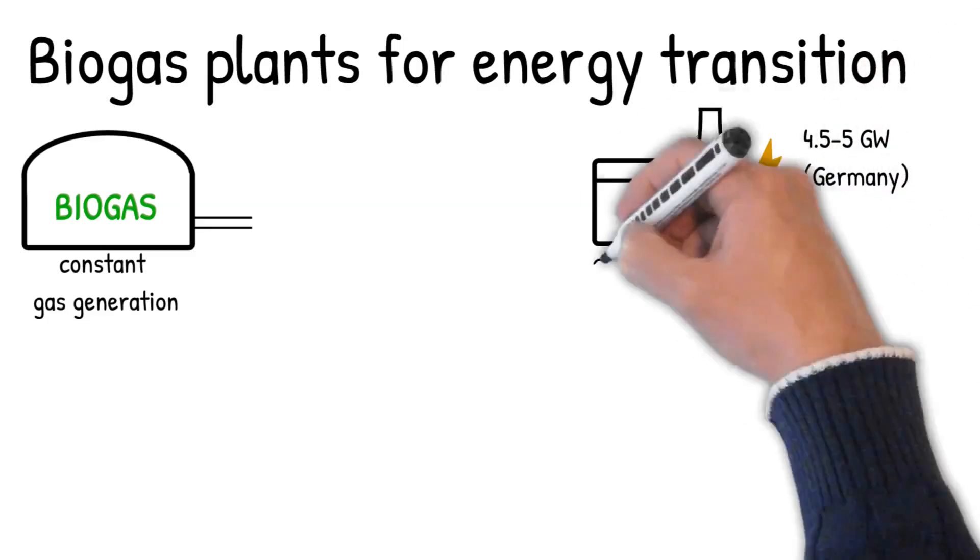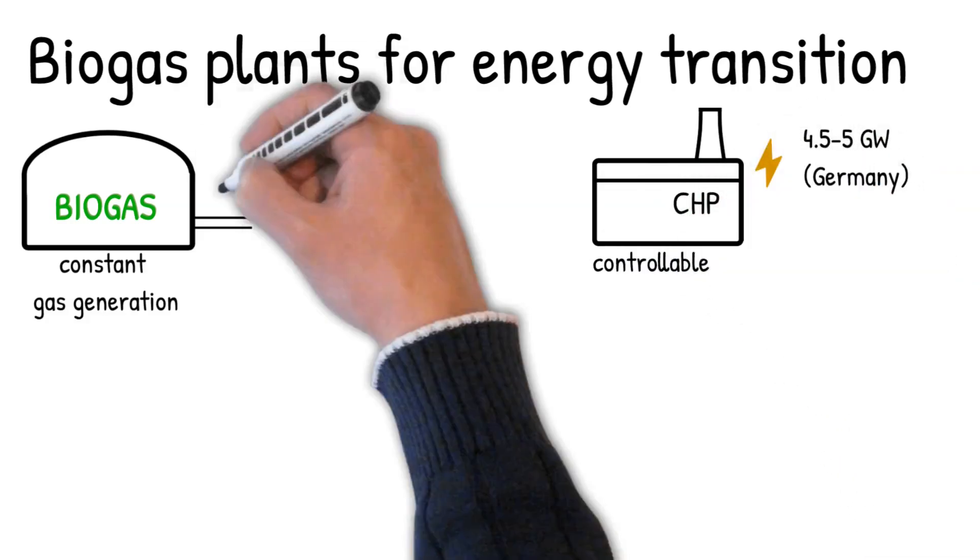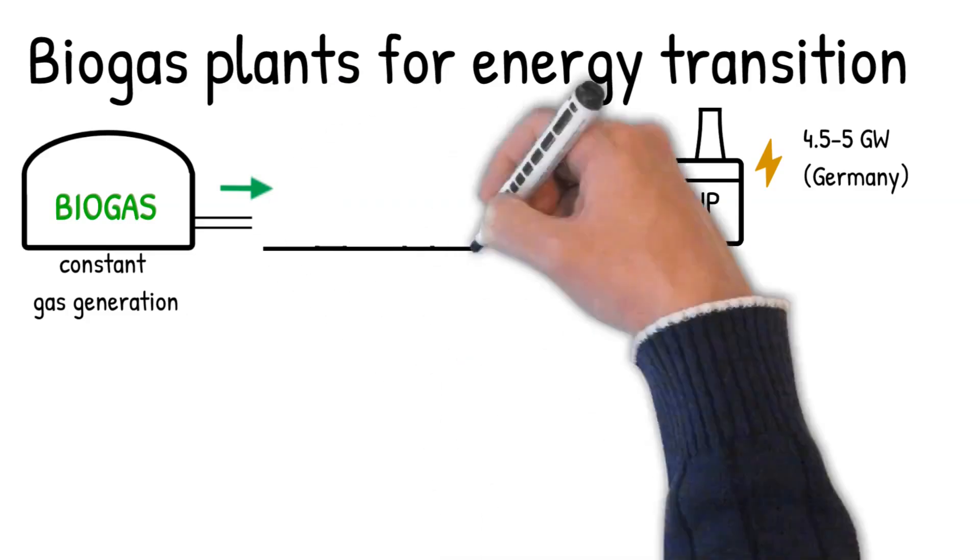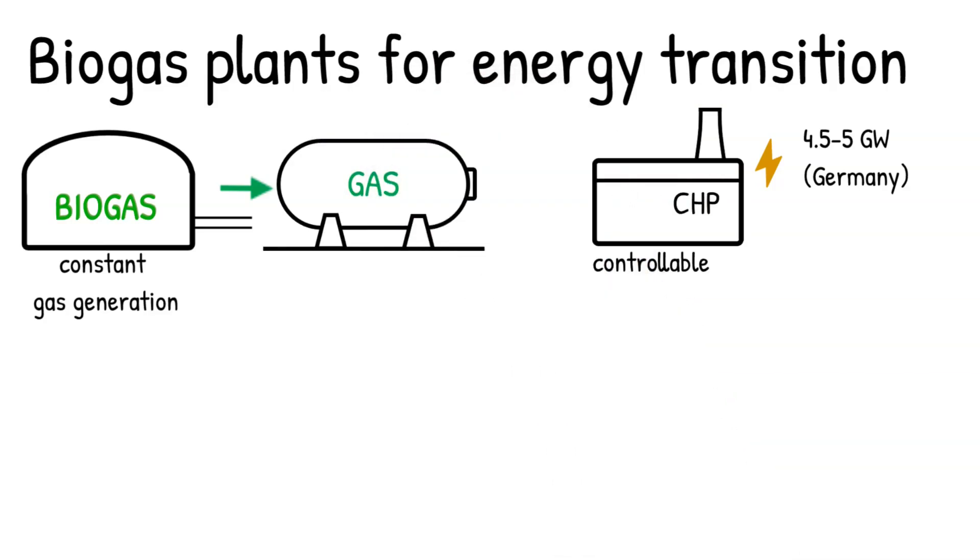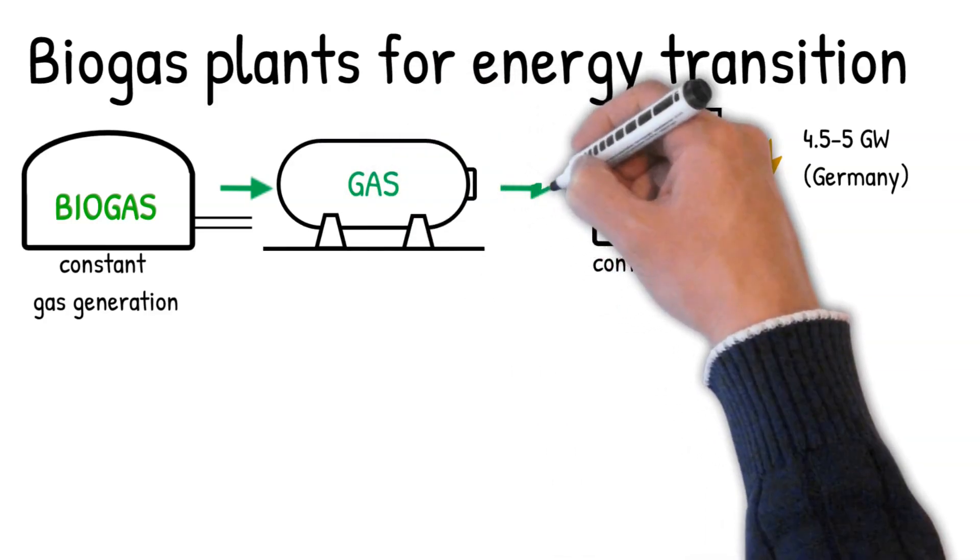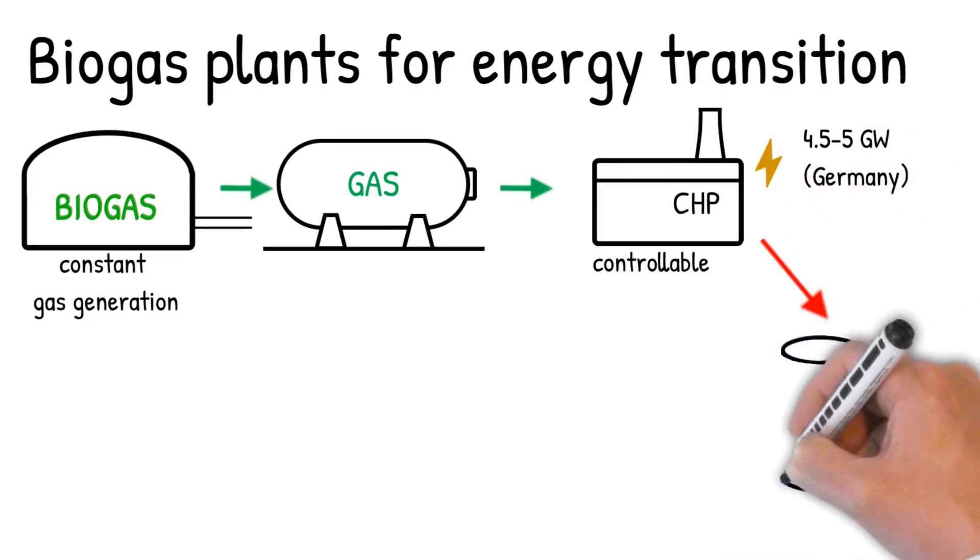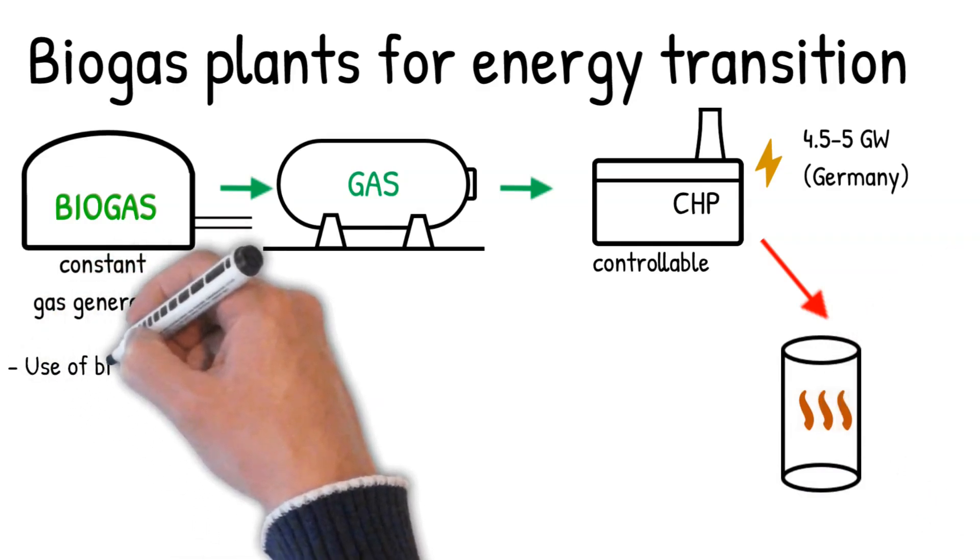However, compared to other renewable generators, such as wind and PV, CHP units are controllable. The biogas can be stored directly in the fermenter for a few hours or relatively easy in a gas storage tank for longer periods. The heat generated by the CHP can also be stored cheaply. In this way, biogas plants can be used variably in the future, similar to gas-fired power plants, to stabilize the power grid.